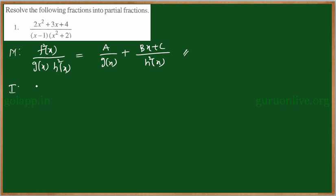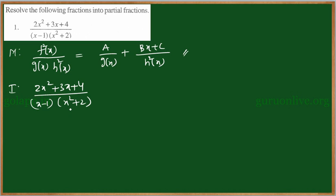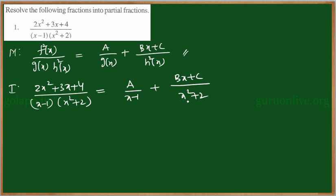Now come to the investigation part. We have 2x squared plus 3x plus 4 divided by (x minus 1) into (x squared plus 2). We cannot further divide this into linear factors. We need to consider x squared plus 2 as a function of order 2. So this can be resolved as A over (x minus 1) plus (Bx plus C) divided by (x squared plus 2). The function x squared plus 2 is not possible to resolve into order 1 factors, so we write the partial fraction in this form.